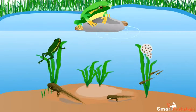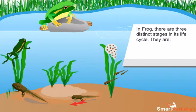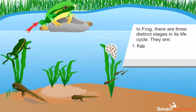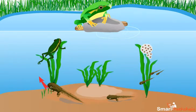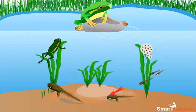Similarly, in frog, there are three distinct stages in its life cycle. The three distinct stages include egg, tadpole and adult. In frog, as a result of external fertilization, the fertilized eggs are formed which will further develop into tadpoles, and tadpole is a larva. The tadpoles contain a tail and they do not look like an adult frog.